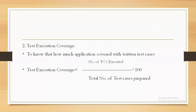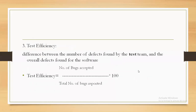Test execution coverage measures how much of the application is covered with written test cases. It is calculated as: test execution coverage = (number of test cases executed / total number of test cases prepared) × 100. Test efficiency measures the difference between defects found by the testing team and the overall defects found. It is calculated as: test efficiency = (number of bugs accepted / total number of bugs reported) × 100.